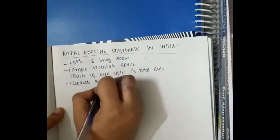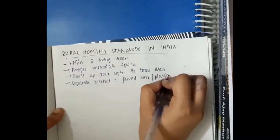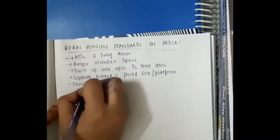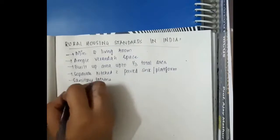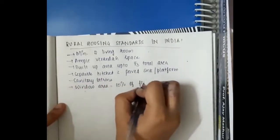Separate kitchen with paved sink or platform should be present separately. There should be sanitary latrine. And window area should be equal to 10% of floor area.